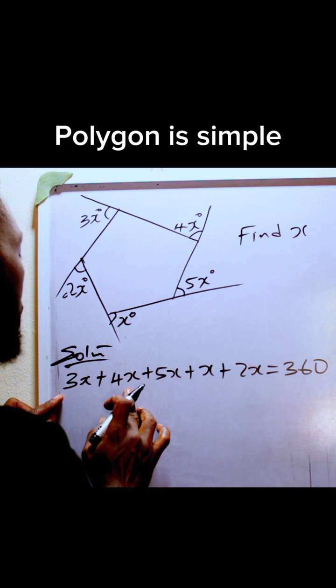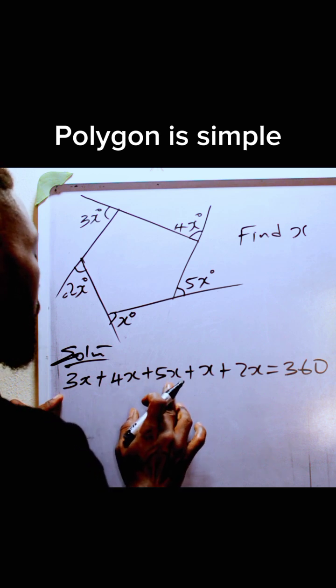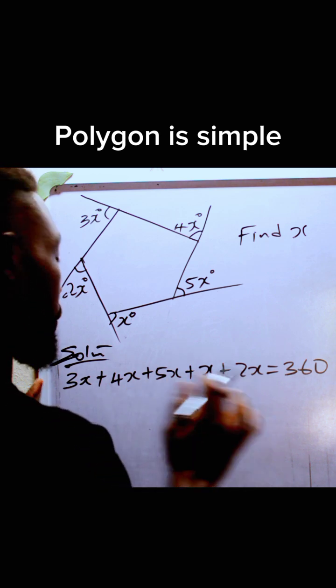3x plus 4x is 7x. This is 12x. That is 15x.